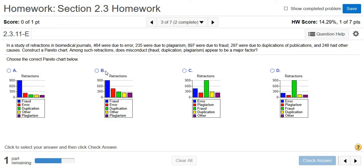In this problem we have to construct a Pareto chart. So it says, in a study of retractions in biomedical journals, 464 were due to error, 235 were due to plagiarism, 897 were due to fraud, 297 were due to duplications of publications, and 248 had other causes.